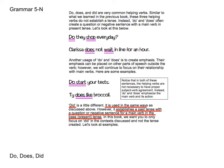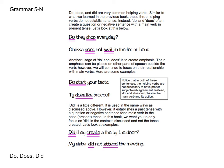Now we'll cover did. Did is a little different. It's used in the same ways — to create emphasis, make a question, or a negative sentence — but it establishes a past tense while the main verb still remains in its base or present tense. We're going to focus on simply the context of creating a question or a negative sentence. So let's look at a couple of examples: Did they create a line by the door? Did helps us to form that question. And: My sister did not attend the meeting — creating that negative format with the help of did.